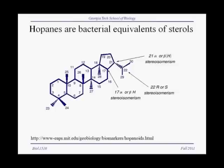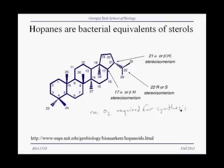Bacteria also have lipids that are special to them, called hopanes. Hopanes are the bacterial equivalent of sterols. Unlike sterols, which have four rings, hopanes have five rings. No oxygen is required for the synthesis of hopanes. Hopanes are thought to serve a similar function in strengthening the membrane and controlling membrane permeability as sterols do in eukaryotic cells. Interestingly, hopanes are abundant enough in petrochemical deposits that some people think they are the most abundant lipids — or in fact the most abundant biological molecules — on Earth.